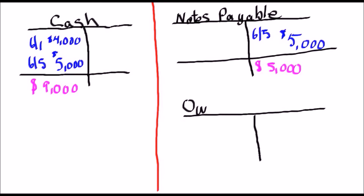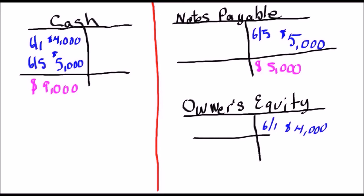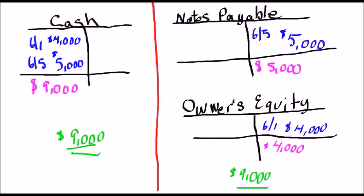The other account we had was the owner's equity account. Owner's equity is an equity account and it's always on the same side as the liability account. On the 1st of June Ms. Smith gave the company $4,000, so her equity stake went up by $4,000. At the end of June she still has $4,000 on the credit side of her owner's equity. So we have $4,000 credit for owner's equity and $5,000 for Notes Payable — totaling $9,000. Her assets also total $9,000. We balance for the end of June.